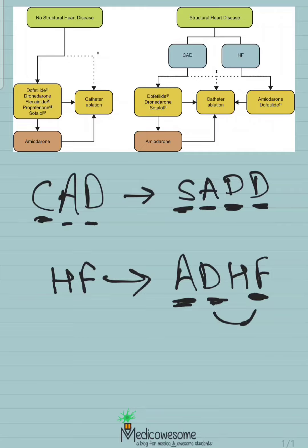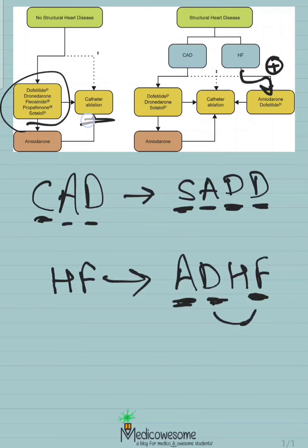Obviously in patients without structural heart disease, you can use all of these and also flecainide and propafenone. As you can see in the algorithm here, catheter ablation is kind of preferred in patients with heart failure, and at any point you could perform catheter ablation on these patients.